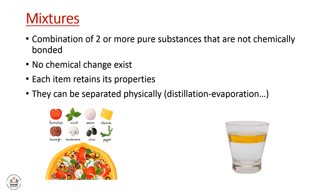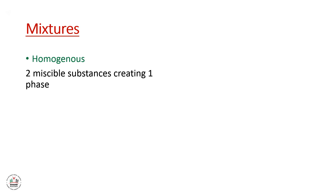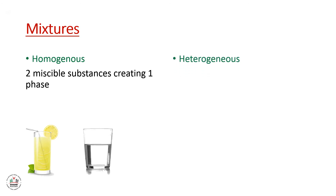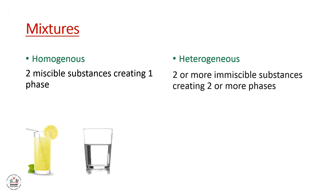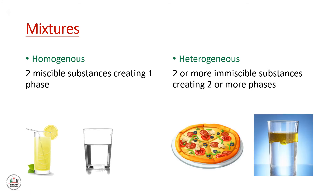An example of a mixture is pizza, or water and oil. We have two different types of mixtures. The first is called a homogeneous mixture, where two miscible substances create one phase — for example, lemon juice, or water and salt combined. The second type is a heterogeneous mixture, where two or more immiscible substances create two or more phases — for example, pizza and water and oil.